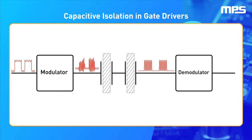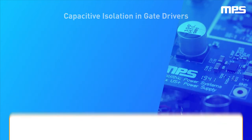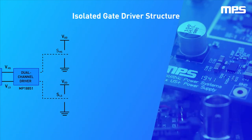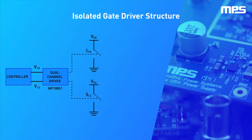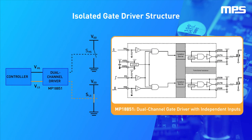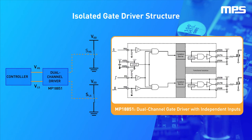Then the demodulator turns the signal back into its original form, which is then used to drive the switch. High-voltage gate drivers can come in many forms. For example, the MP18851 gate driver includes two independent channels and can drive two transistors separately in a single chip.